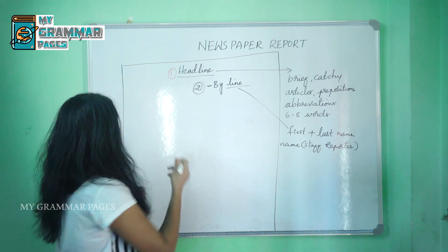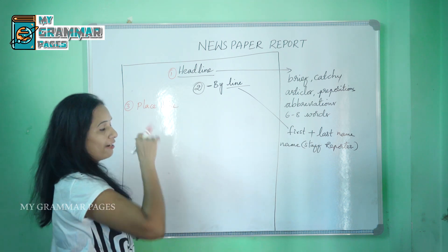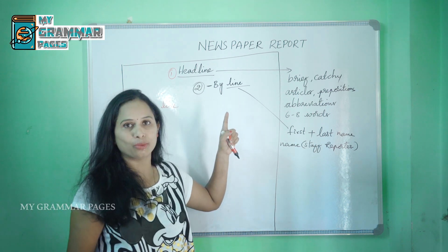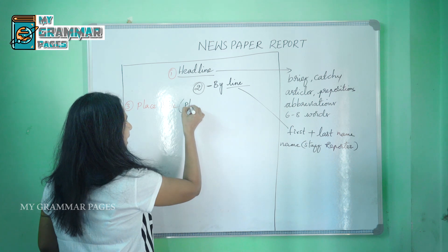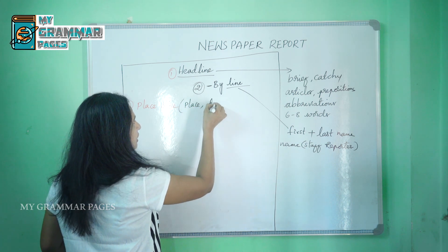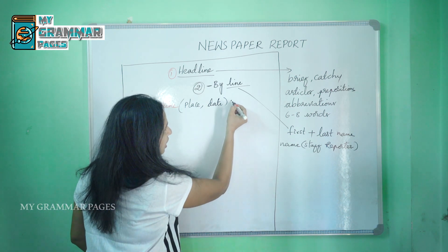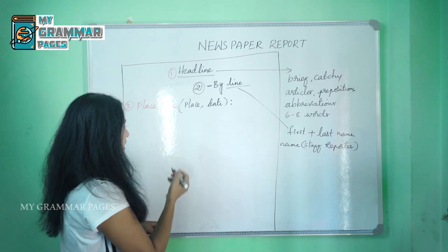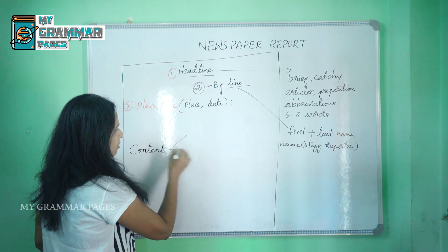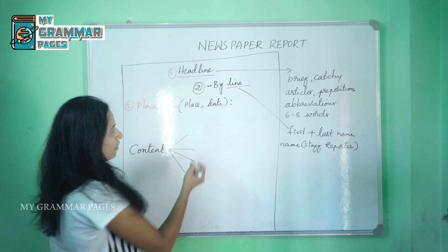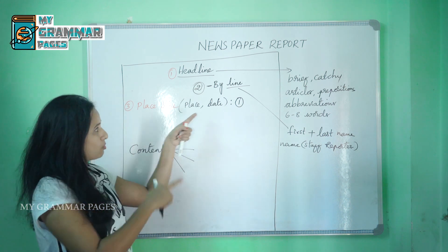Coming to point number three, this is the place line. So we have three lines: the headline, the byline, and the place line. The place line includes the place, a comma, and the date where the story begins. After this, you need to keep a colon, and then we plunge directly into the content. The first paragraph starts right after writing the name of the place and date.